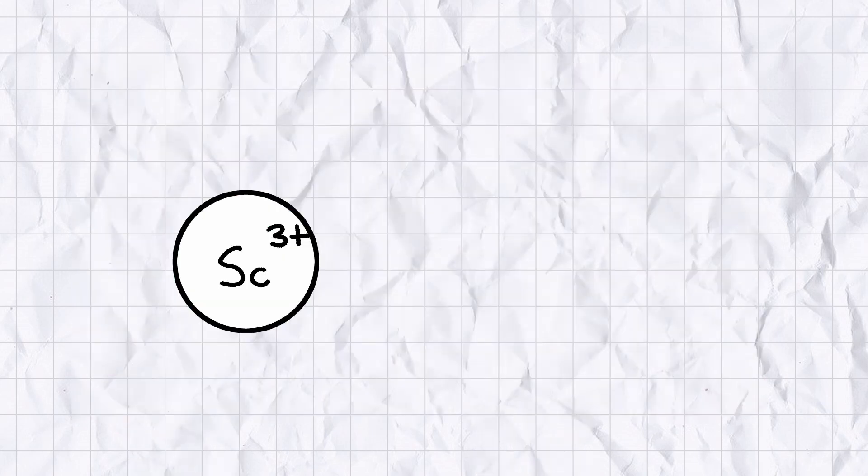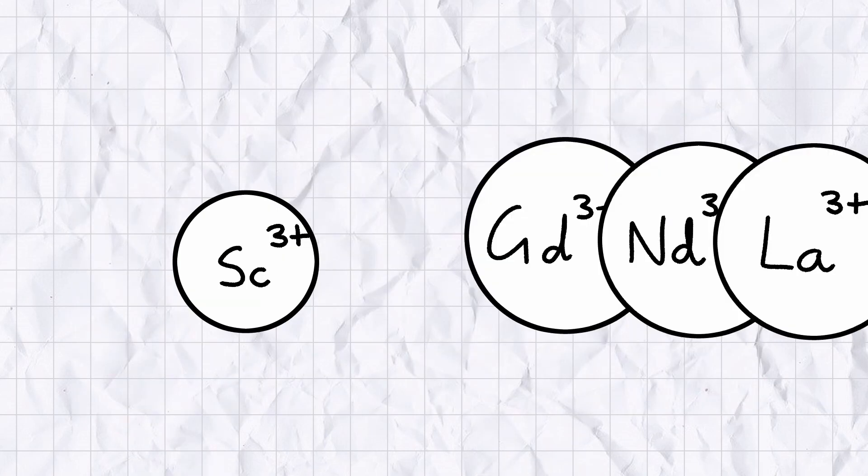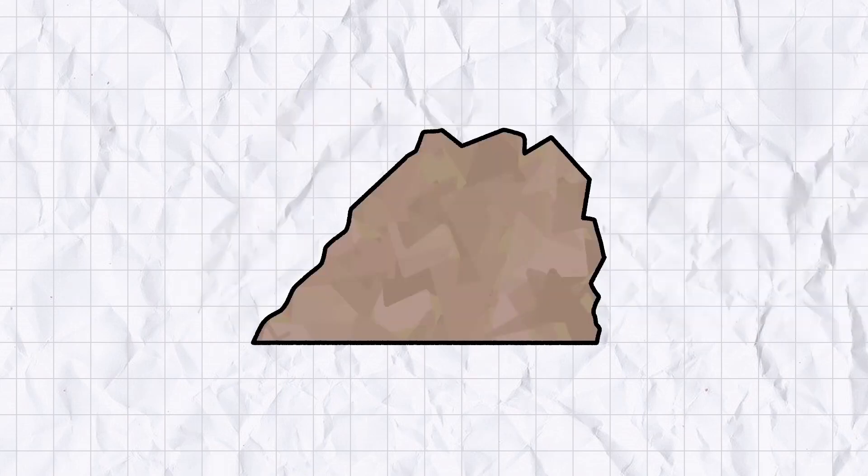Scandium's chemistry is far closer to the rare earth elements than the transition metals, which also tend to form plus-3 ions. Concentrated deposits of Scandium are rare, and it's most frequently found as an impurity in uranium oxides.